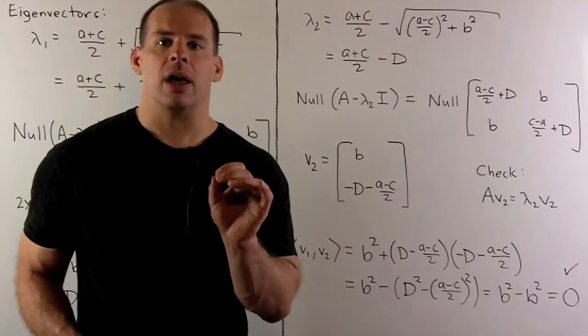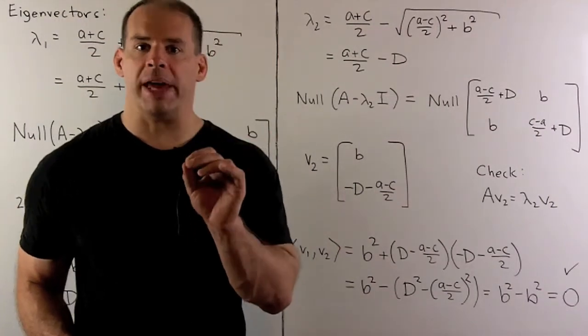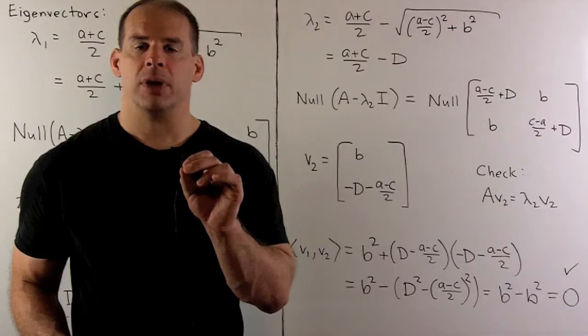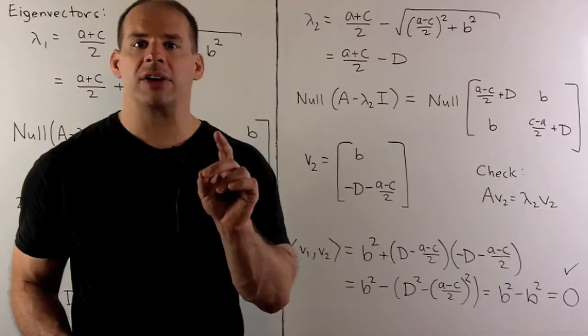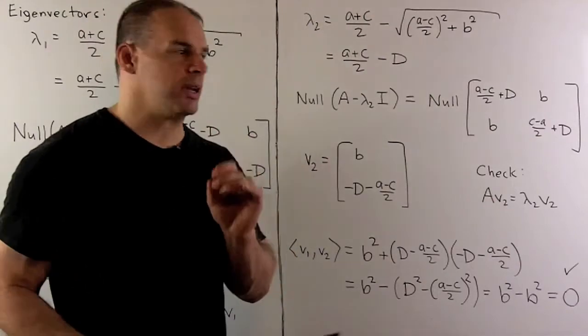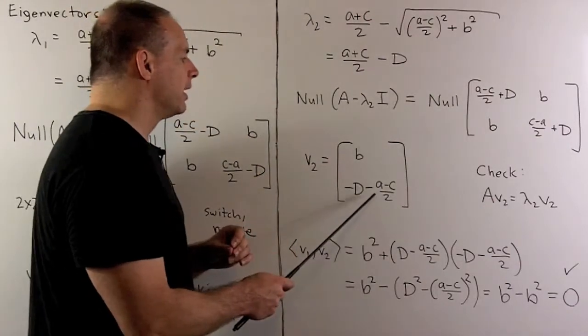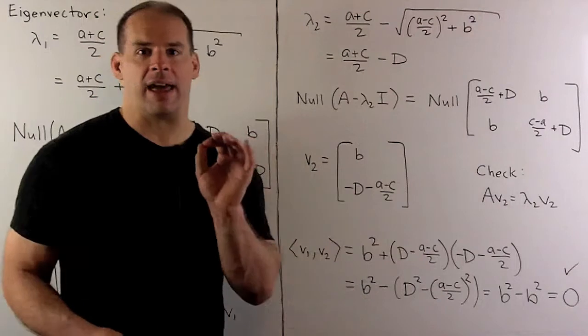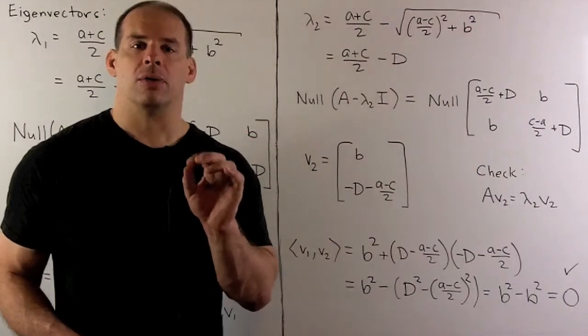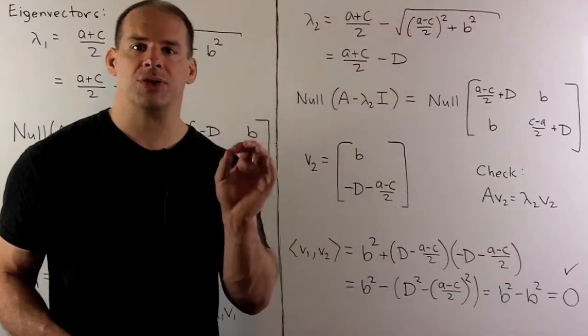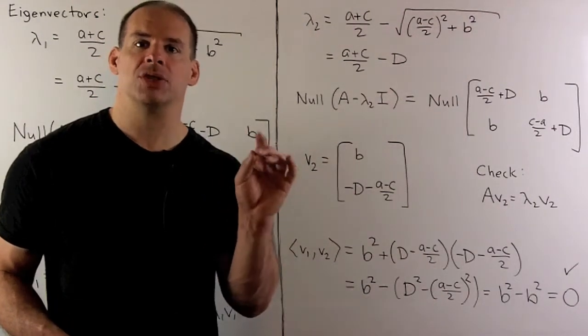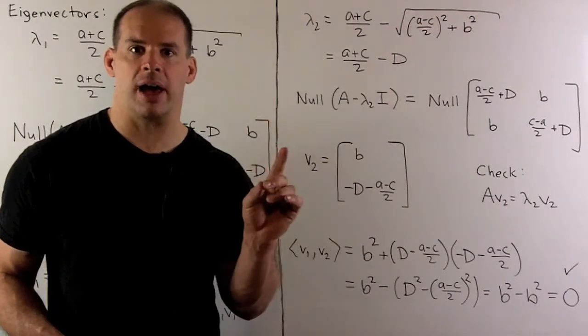Now if we want an orthonormal basis, we need unit vectors, which means finding the length of each vector and dividing by that length. Here that's going to be messy, so we skip that step for the general case.